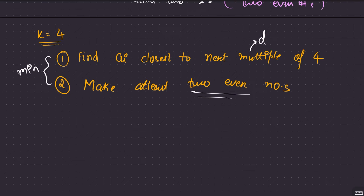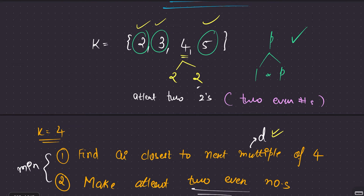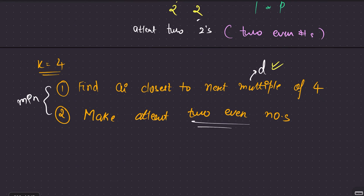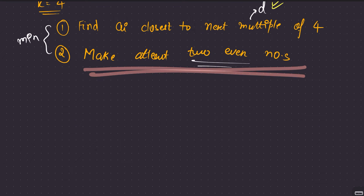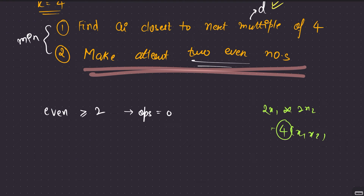To handle option 2 — making at least 2 even numbers — we count how many even numbers exist. If even count is greater than or equal to 2, the product is already divisible by 4, so 0 operations are consumed. You already have numbers like 2x1 and 2x2, and their product gives 4 times x1 times x2, which is a multiple of 4.